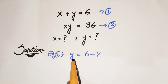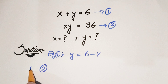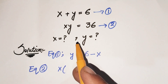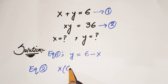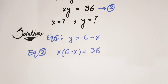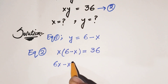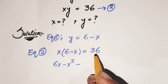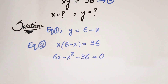Now putting this value of y into equation 2, equation 2 gives us x times y, and we substitute y with 6 minus x, which is equal to 36. Multiplying x with 6 minus x, we get 6x minus x squared, and shifting 36 to the left side gives us minus 36, equal to 0.